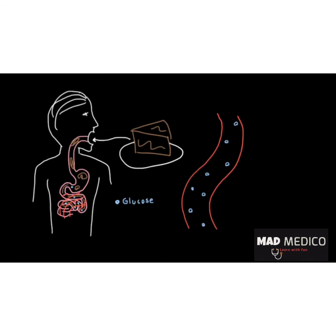The glucose will be able to travel to all the different parts of your body that need energy. For example, they might travel all the way up to your brain, reach a brain cell, and some of those glucose molecules will move into the brain cell — giving the brain energy. So far it's pretty simple: you eat a piece of cake, you end up with glucose in your blood, and now you have energy.